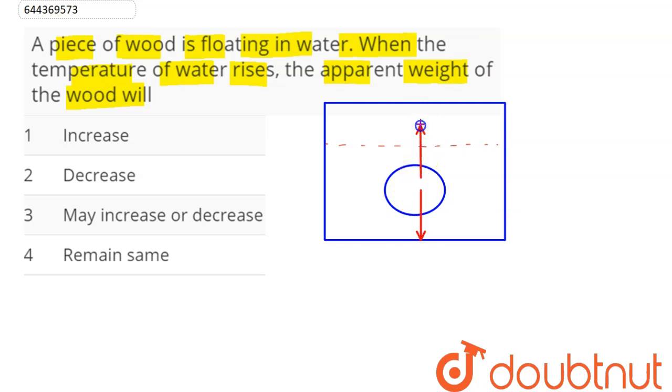weight mg downward and buoyancy force acting upward. So here weight will be mg, and buoyancy force acting upwards will be equal to density of water into volume of the wood into g.